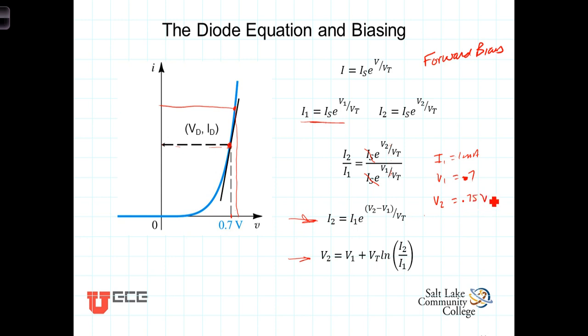Well, we can solve for I2 over I1, the ratio of those two, and get that I2 over I1 is equal to E to the V2, which was 0.75 minus V1, which was 0.7, divided by V sub T. We're going to just use that 0.025 volts or 25 millivolts. And when we calculate that, or do the calculation, we find that the ratio of I2 over I1 is equal to 7.4.